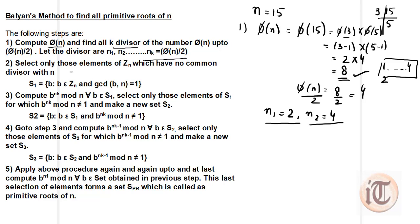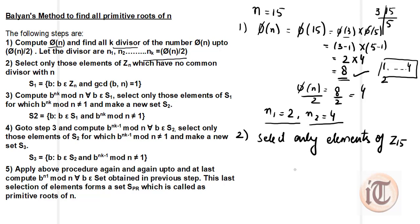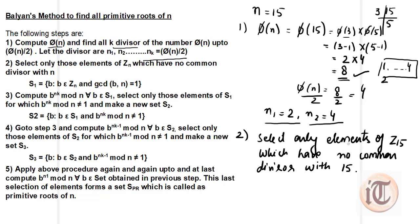Step 2 says that we have to select only those elements of Z_n which have no common divisor with the number n. Since n is 15, we select only those elements of Z_15 which have no common divisor with 15. After selecting those elements, we create a set S1 and put all those elements into S1.